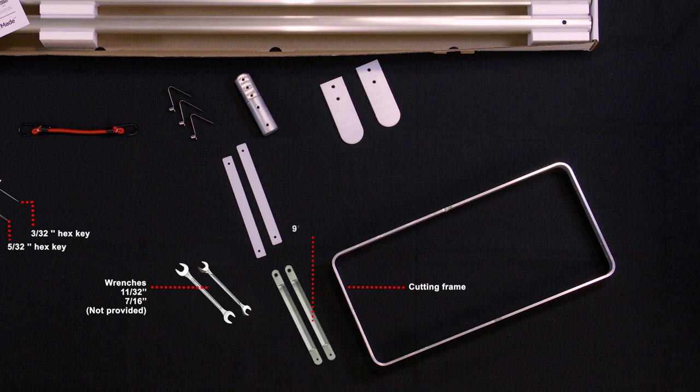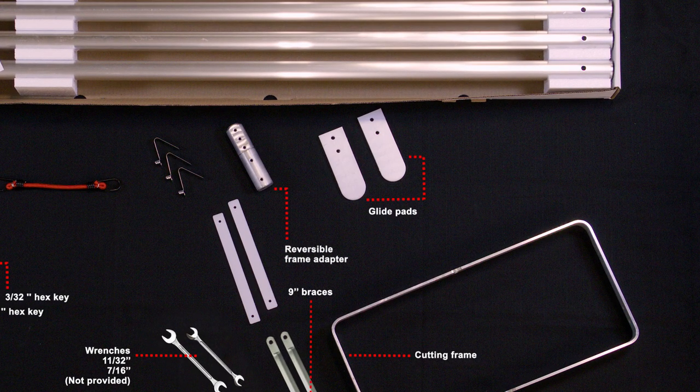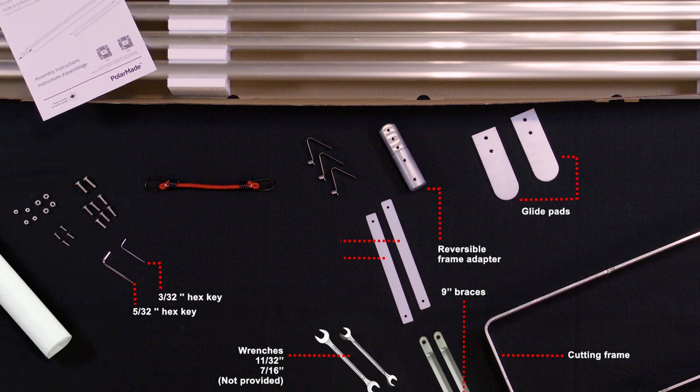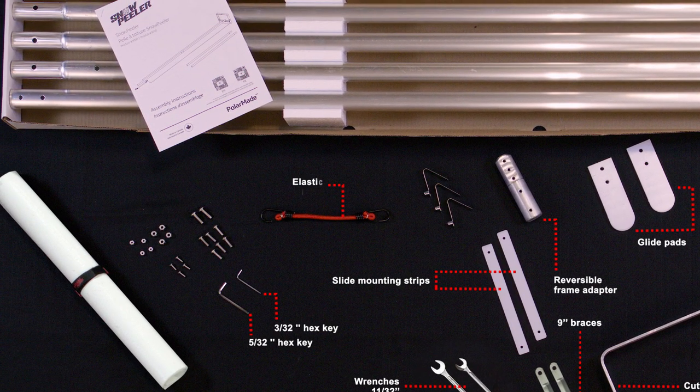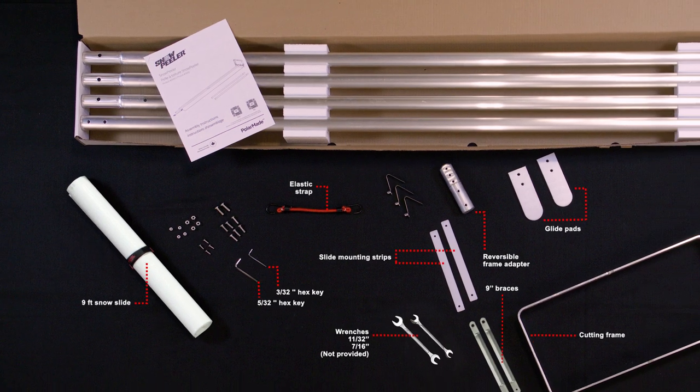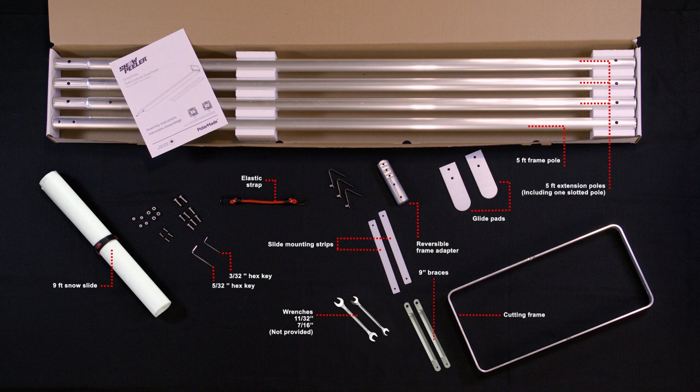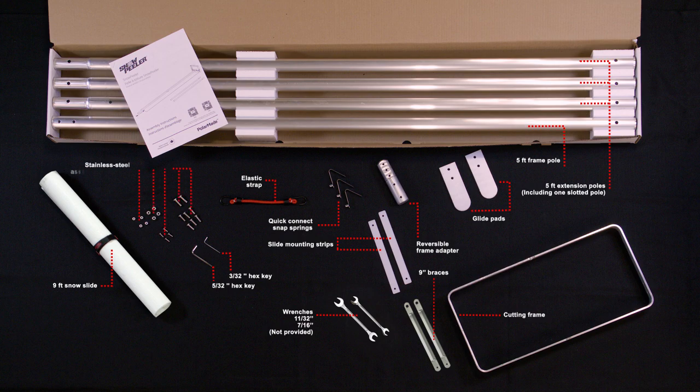With Snow Peeler you'll find the following in the box: one cutting frame, two 9 inch braces, two glide pads, one reversible frame adapter, two slide mounting strips, one elastic strap, one 9 foot snow slide, one 5 foot frame pole, two 5 foot extension poles, one 5 foot slotted pole for the slide attachment, three quick connect snap springs, and stainless steel assembly hardware.